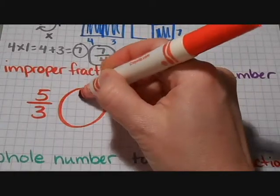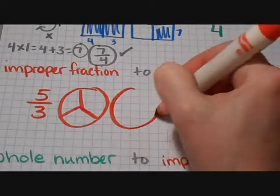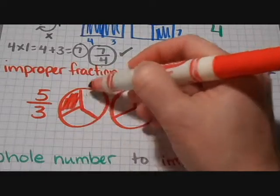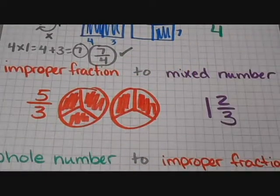For thirds, I like to do circles. So I've got one, two, three, four, five, five thirds.